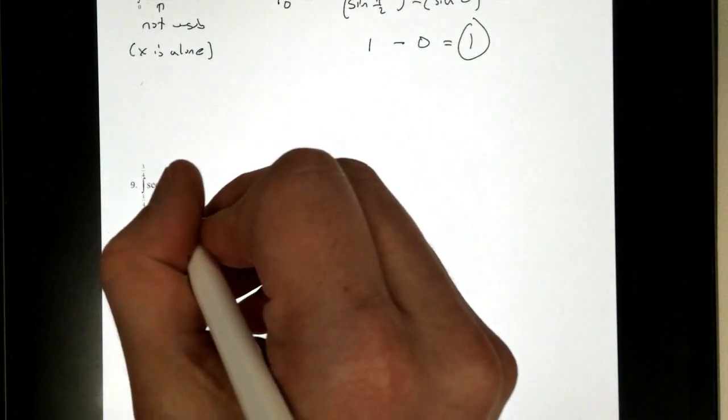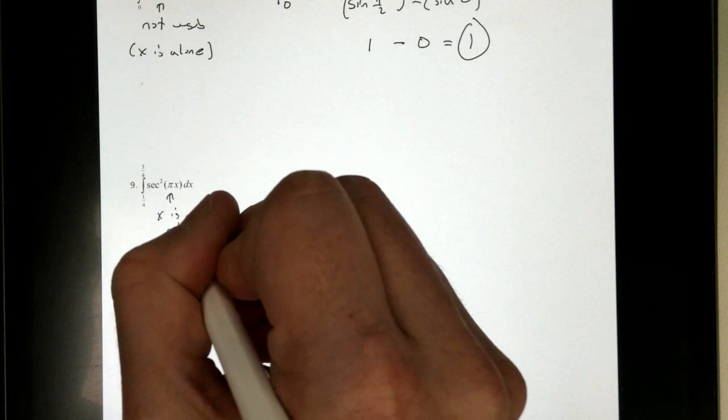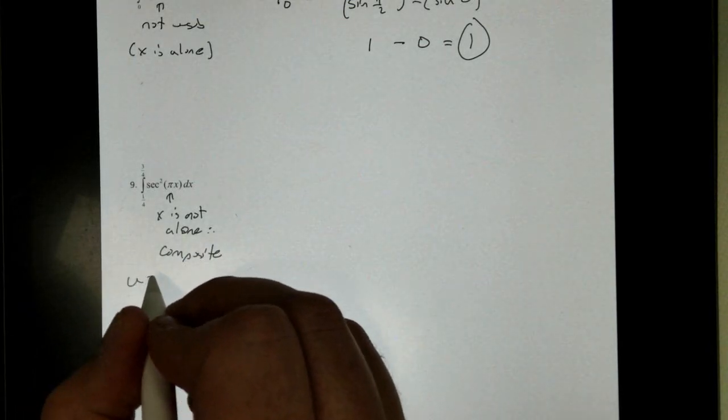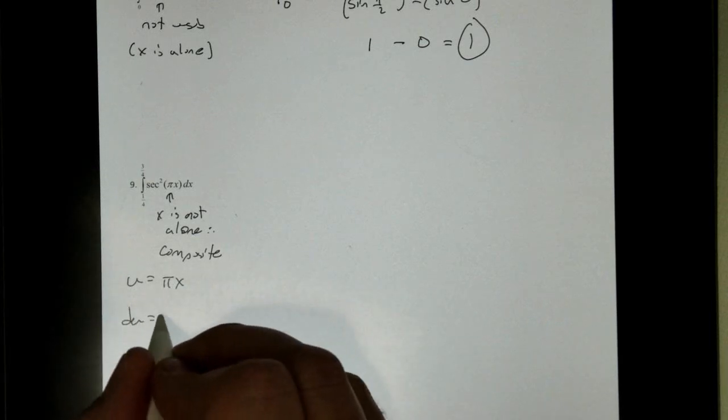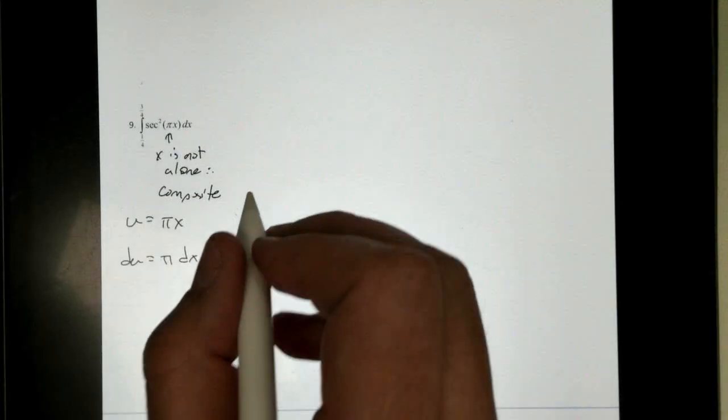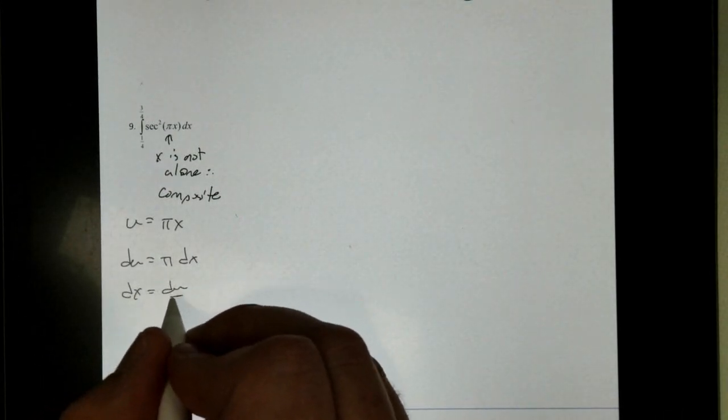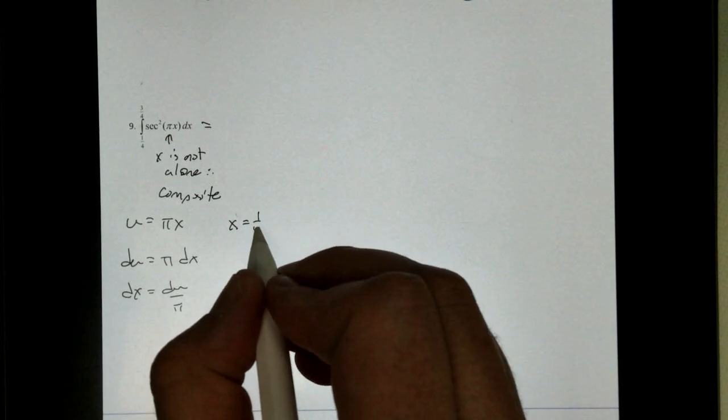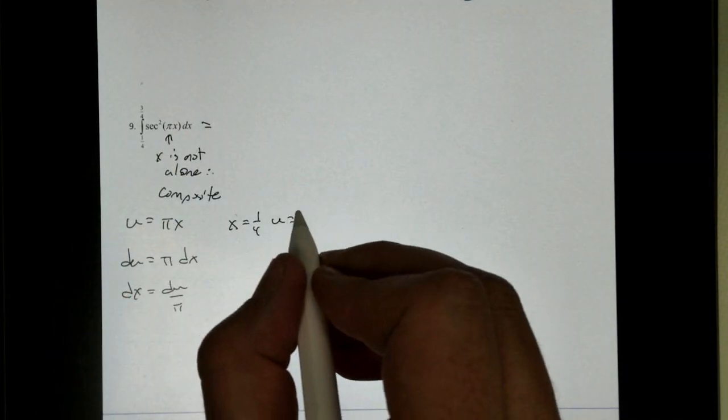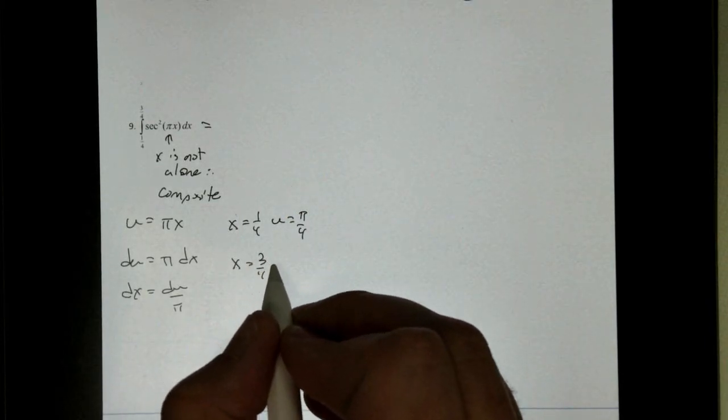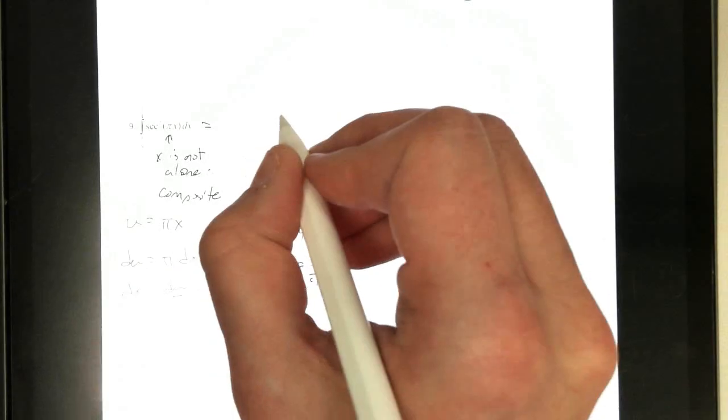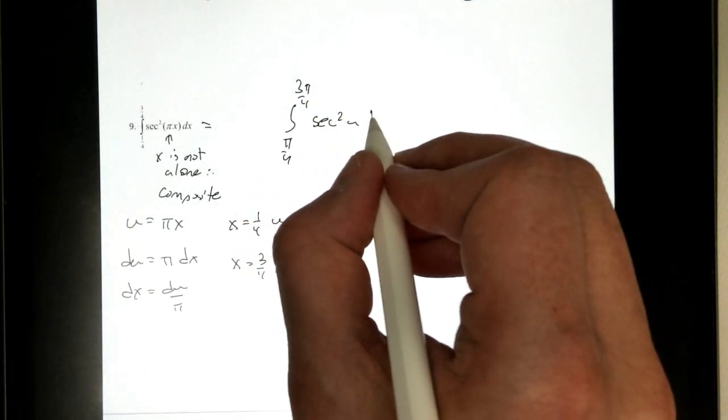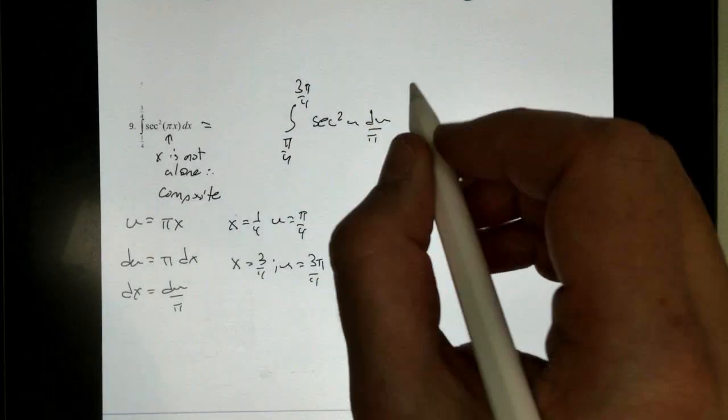Number 9. Now take a look here. Here, x is not alone. Therefore, this is composite. And we're going to use u substitution. Our u is just going to be the inside. Pi x. Du is pi. Because pi is just a constant, like 5. dx. So my dx becomes du over pi. So when I write this out, change my domain first. When x is 1 fourth, u is pi over 4. When x is 3 over 4, u is 3 pi over 4. We're going to be left with the secant squared of u, du over pi.